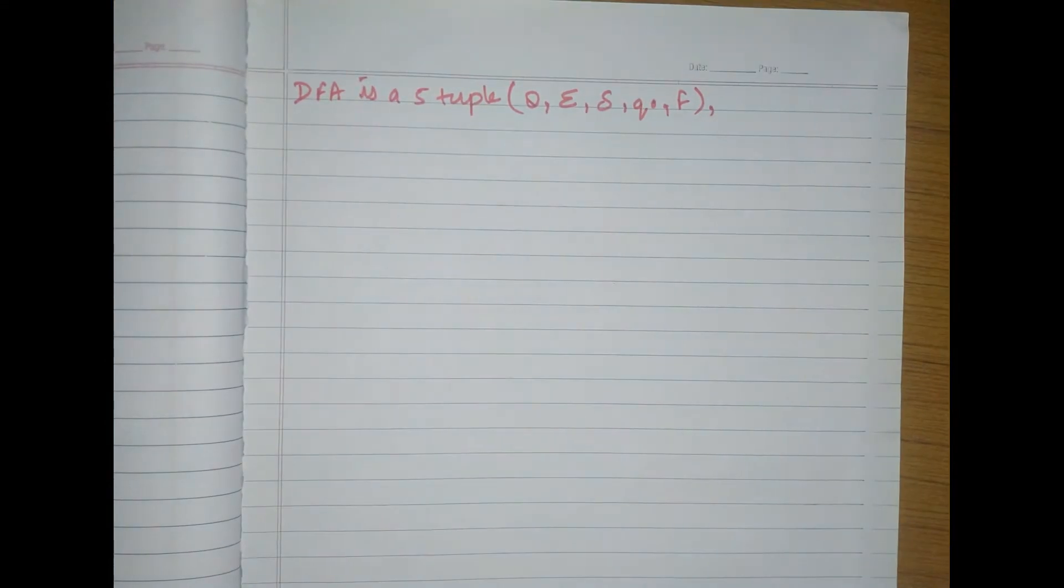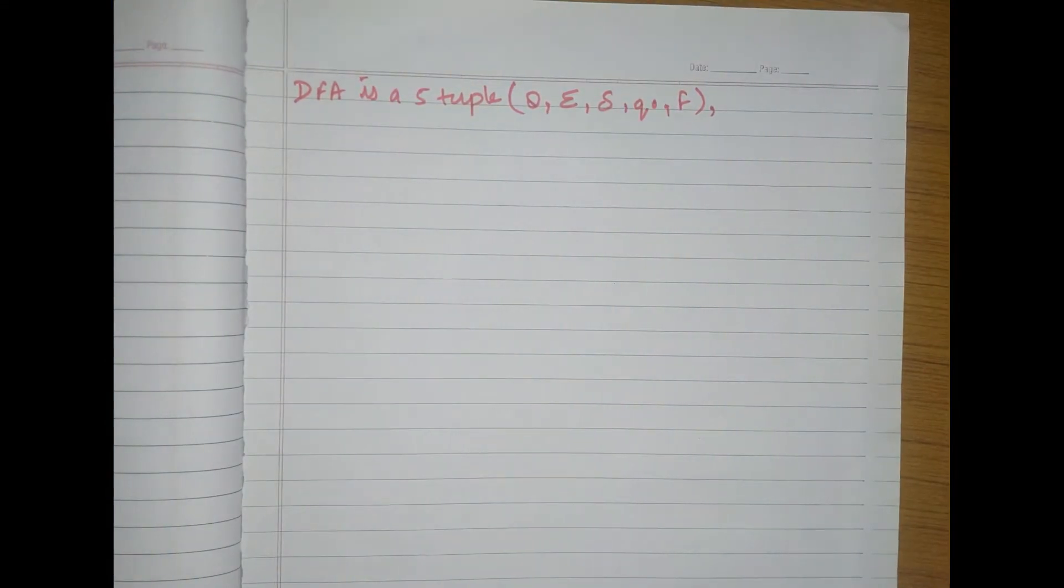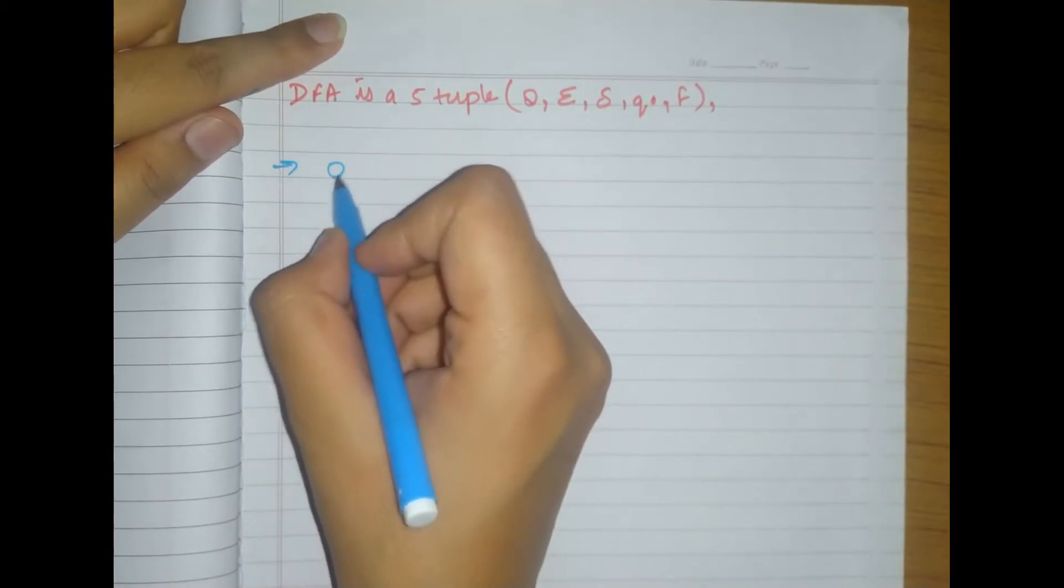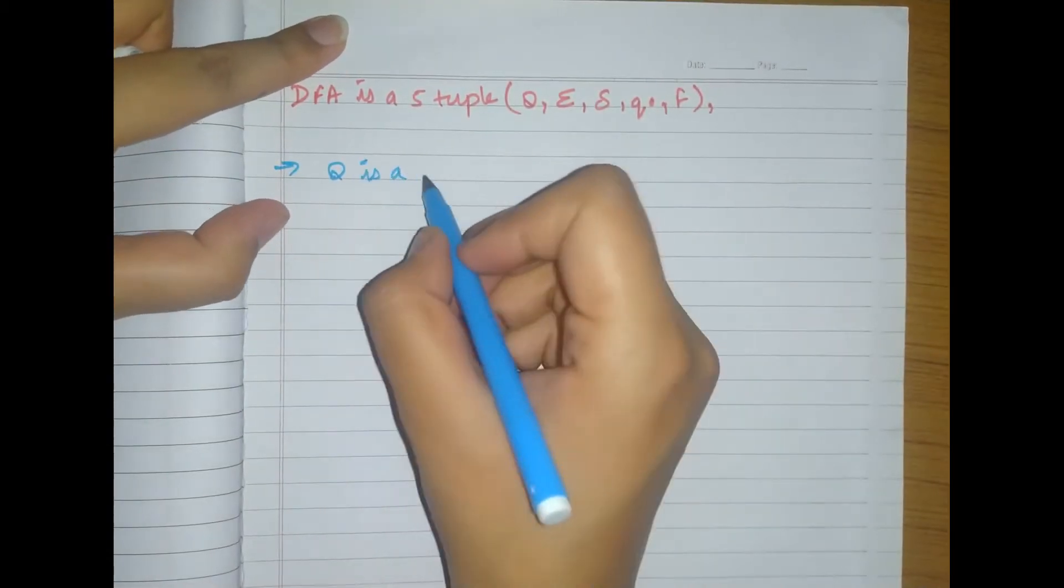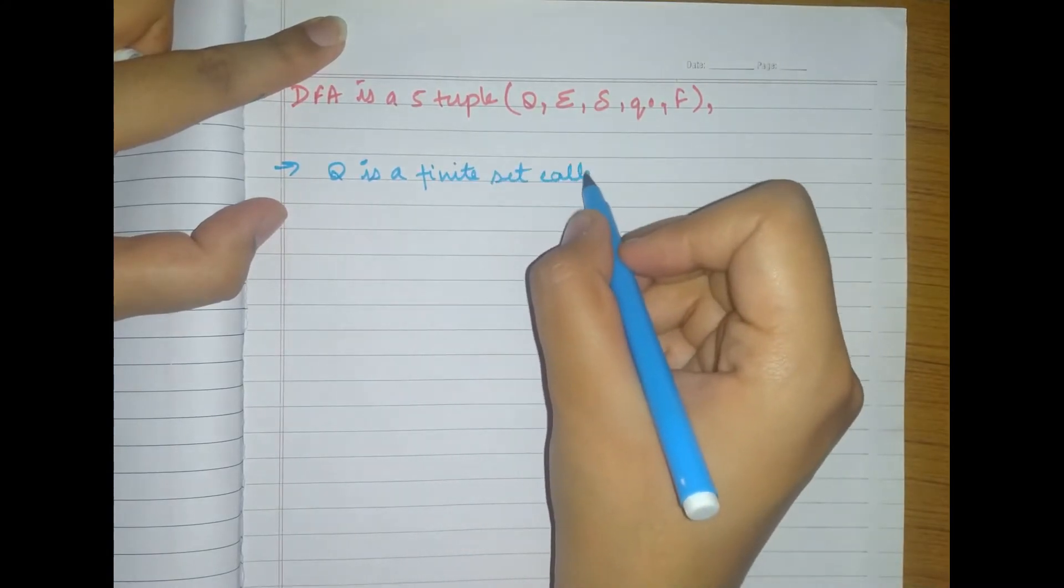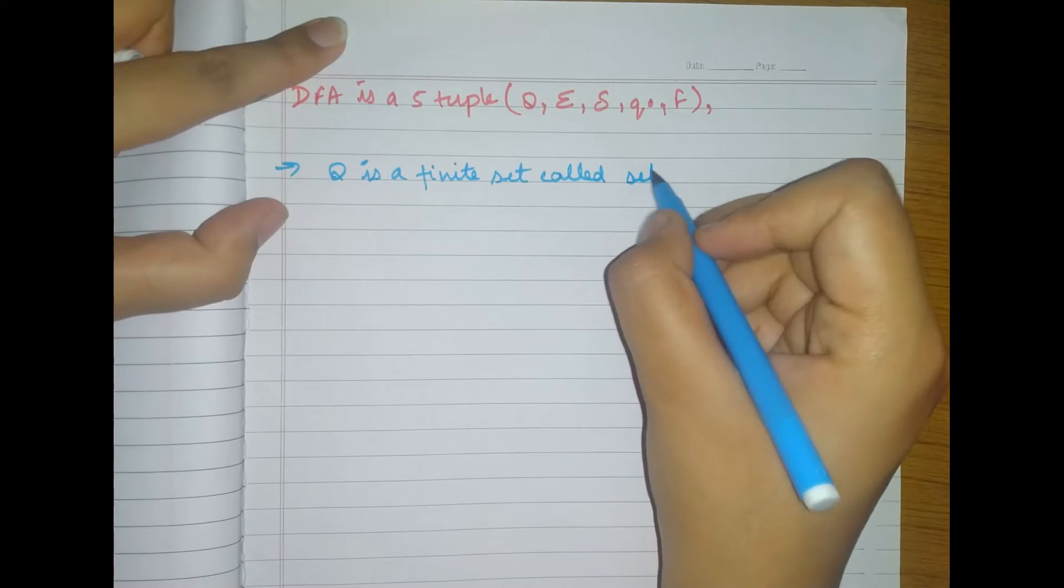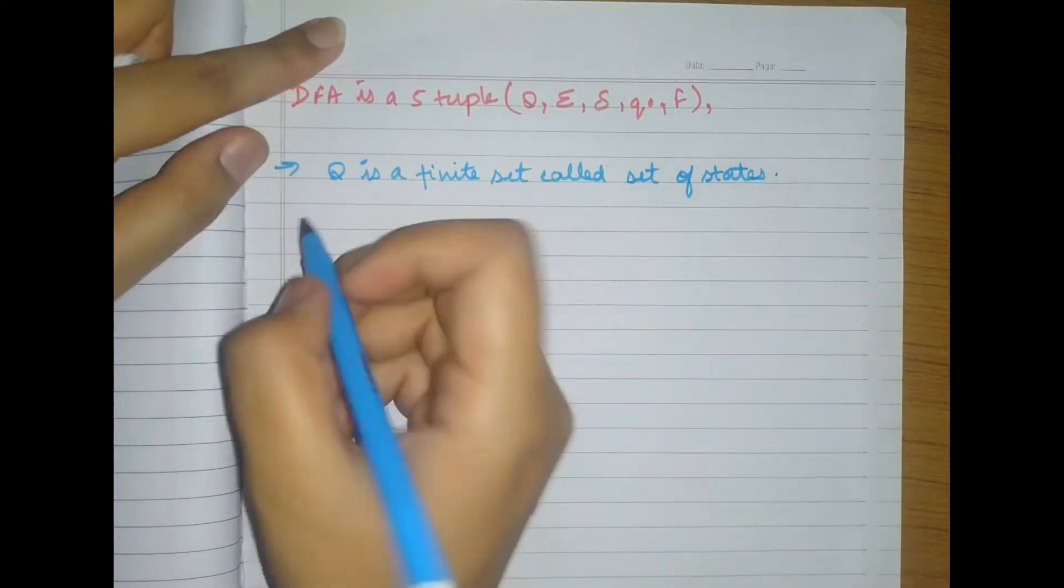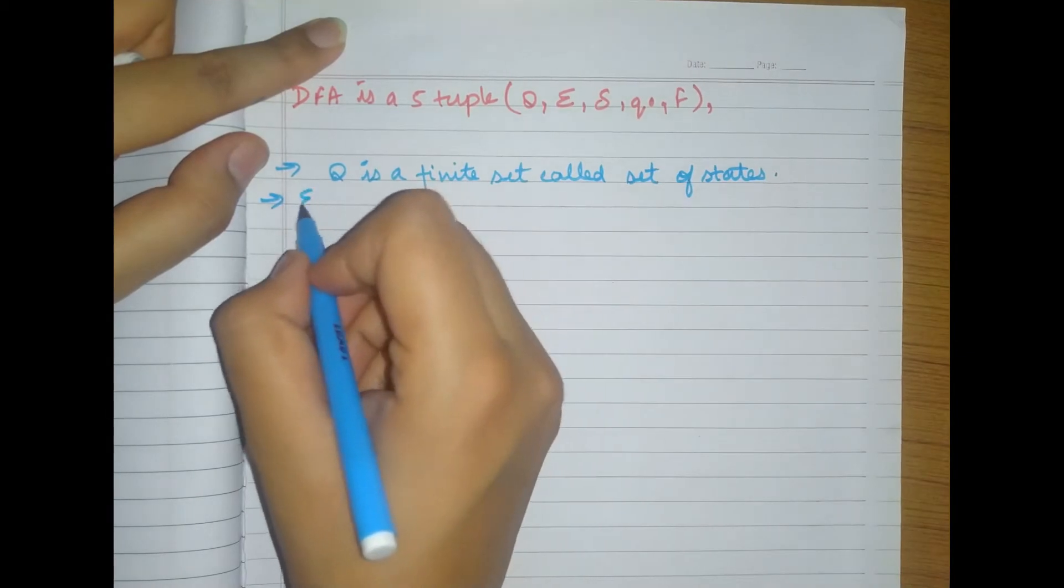So let me explain these states. So what is Q here? Q is a finite set called set of states.